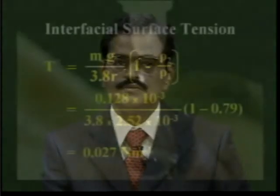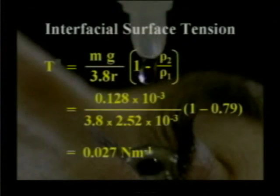By measuring the radius of the tube, the relative density of kerosene, and the mass of one drop, we can easily calculate the value of surface tension between kerosene and water.